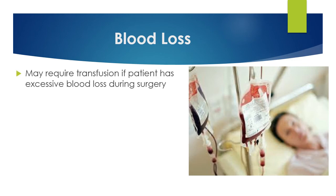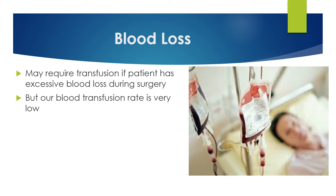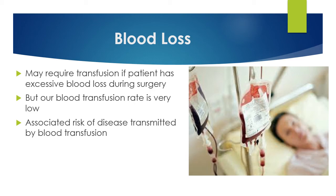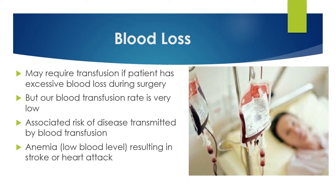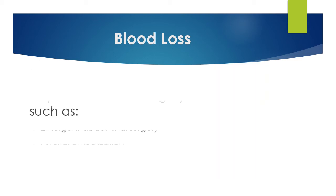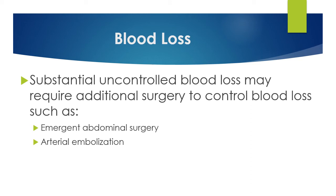Blood loss can occur with any surgery. If blood loss is extreme, it can require a transfusion, though the transfusion rate is very low with spine surgeries. There are associated risks of disease transmission via blood transfusion. Blood loss can also cause anemia, resulting in stroke or heart attack. Substantial and uncontrollable loss may require additional surgery or arterial embolization to control the bleeding.